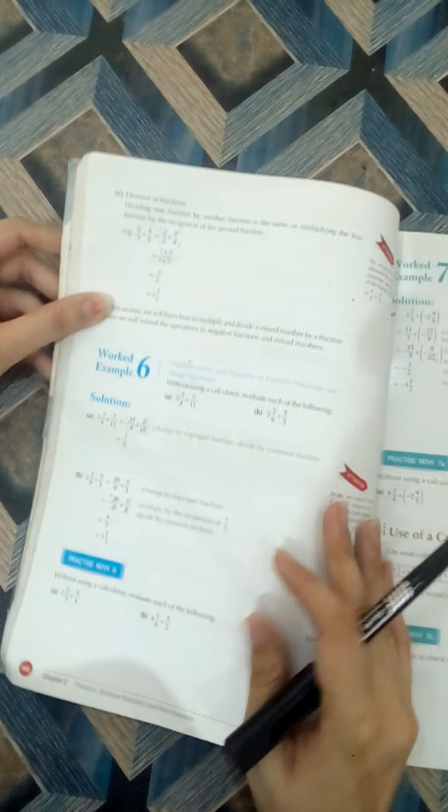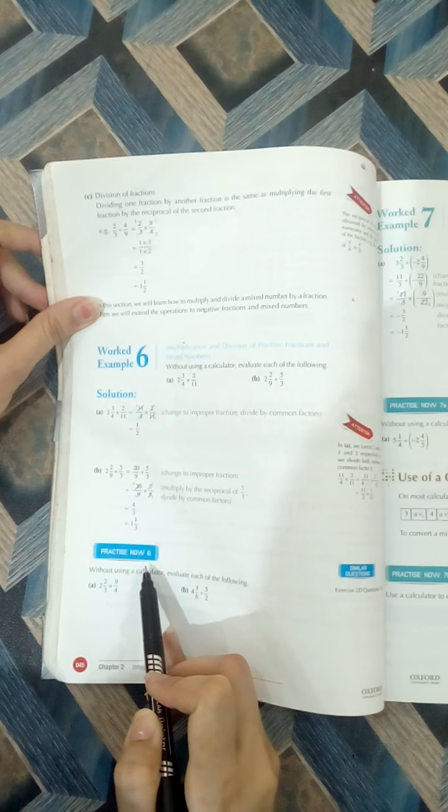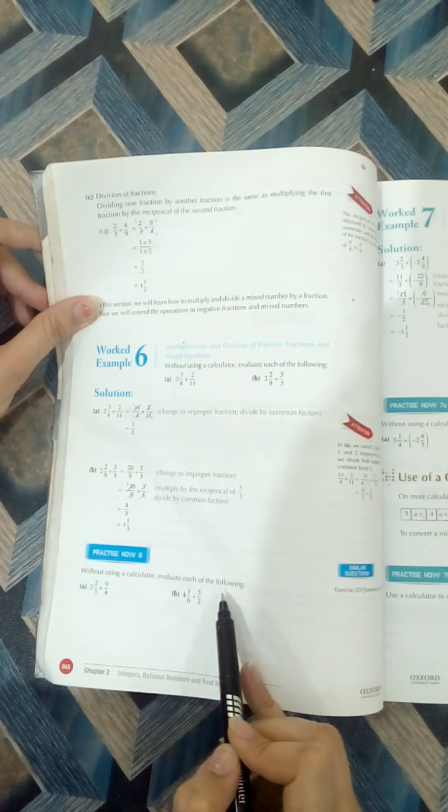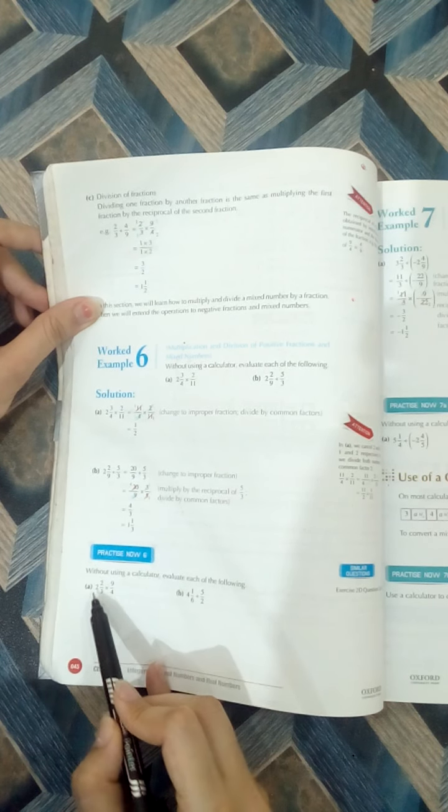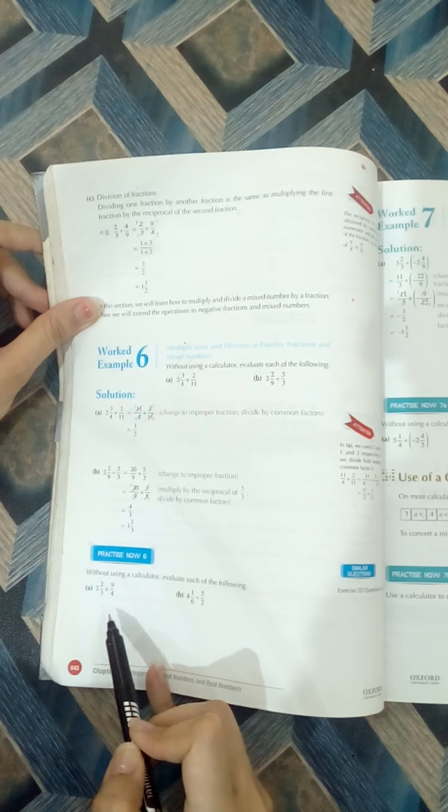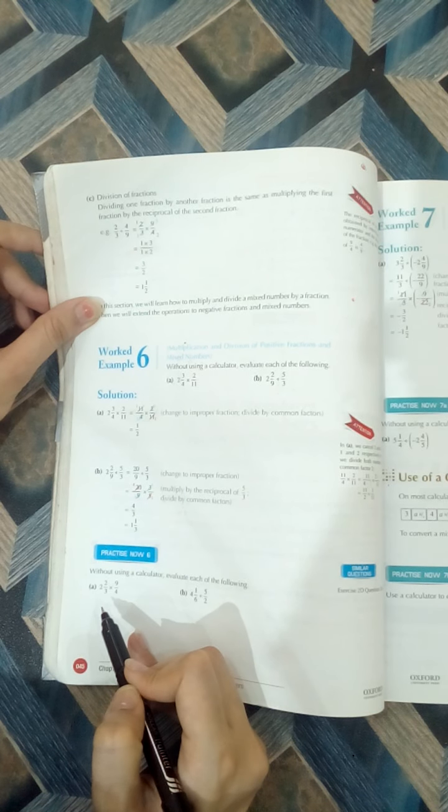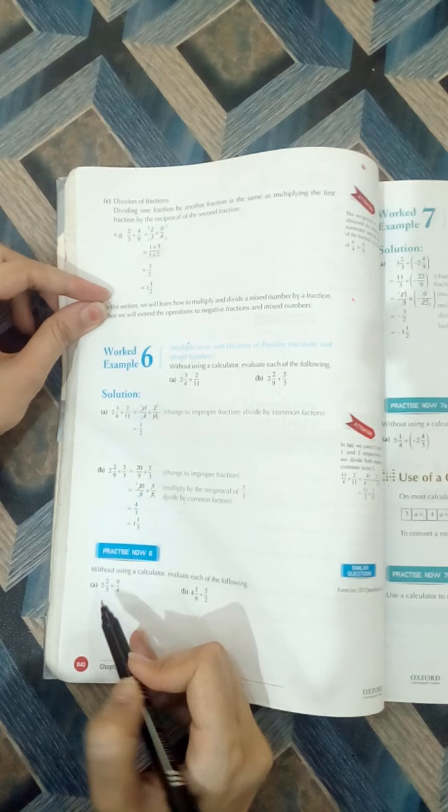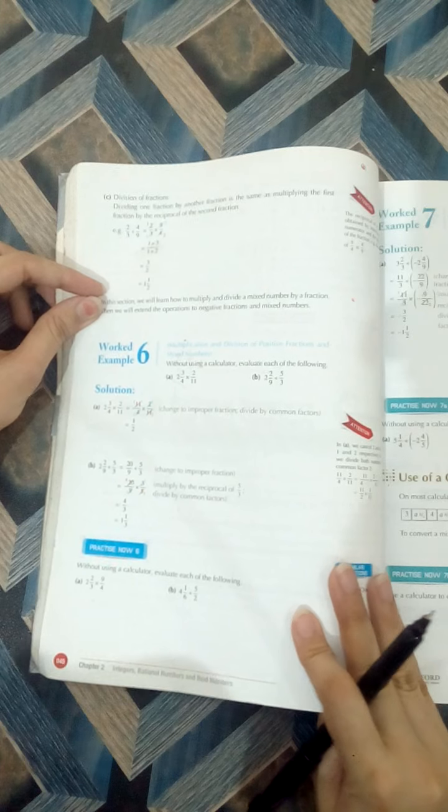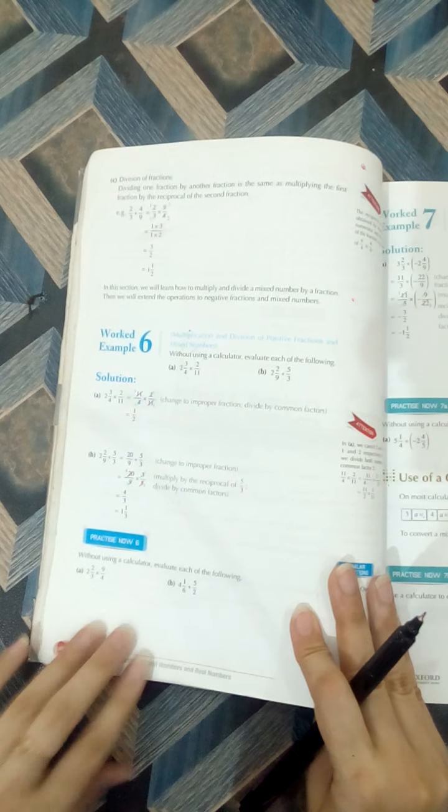Now today, page number 45, and we have to practice now 6. Without using calculator, evaluate each of the following: 2 whole 2 by 3 multiply by 9 by 4. Students, in previous questions we have solved the fractions in addition or subtraction form, but today we are going to multiply two fractions. Clear? It is very easy, no difficulty you will see in this question.